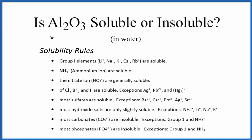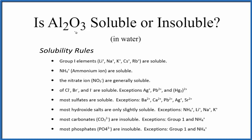In this video, we'll look at whether Al2O3 is soluble or insoluble in water. Al2O3 is aluminum oxide. If we put solid aluminum oxide in water, will it dissolve? If we look at our solubility rules, we don't see aluminum on our list, and we don't see oxides.